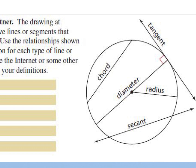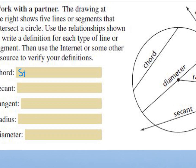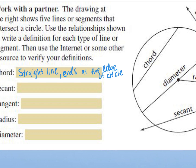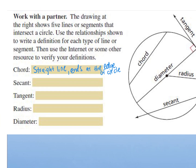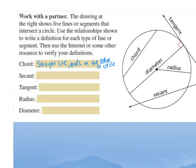What do you notice about the chord? It's a straight line. Does it end? It ends on the other side of the circle, on two edges of the circle. It ends at the edge of the circle. It's not going through the middle. I want you to do that same thing for each of these — write your own personal definition for each one and let's see how close you get to the actual formal definition.